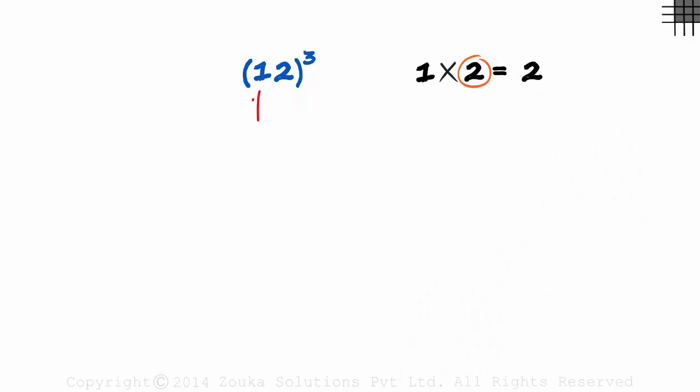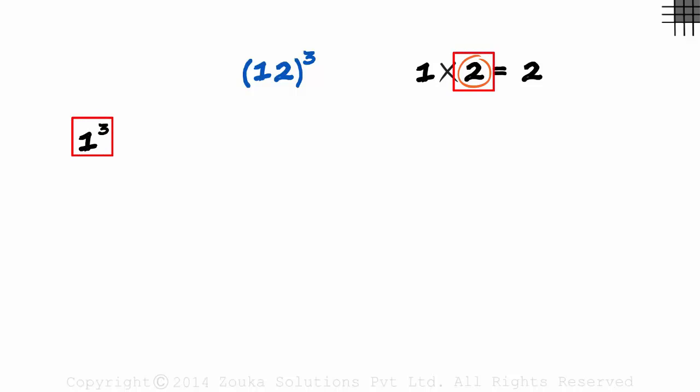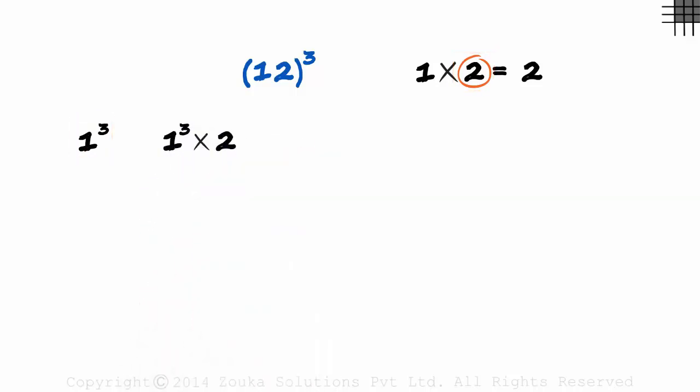Once this is done, we write the cube of the tens digit here. That will be 1³. In the second column, we multiply 1³ with this number. So we have 1³ multiplied by 2. In the third column, we multiply this product with this number again.